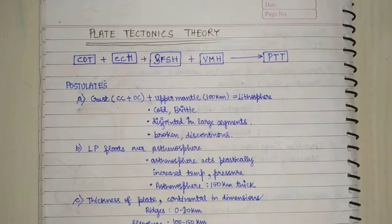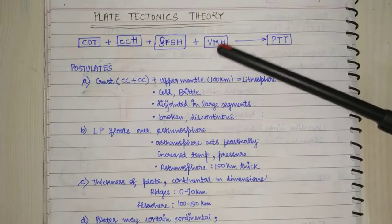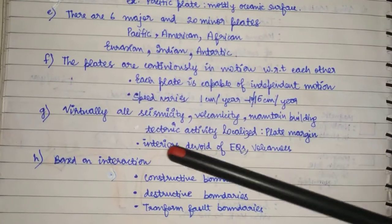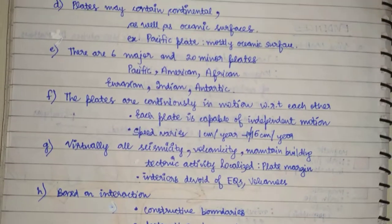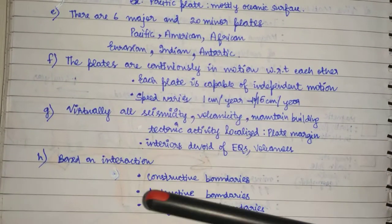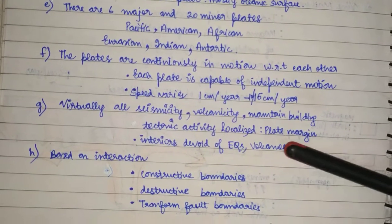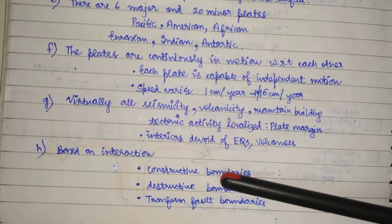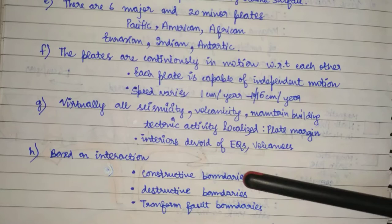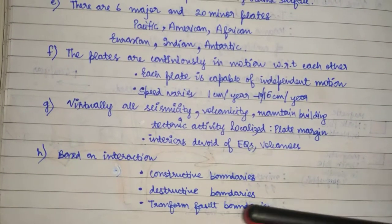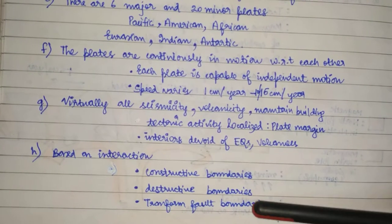Hello guys, welcome back. In the previous video we talked about plate tectonics theory. We summarized that based upon the interaction of different plates, it can either be a constructive boundary because the plates are diverging, a destructive boundary because plates are converging, or a transform fault boundary because it's a kind of conservative boundary.